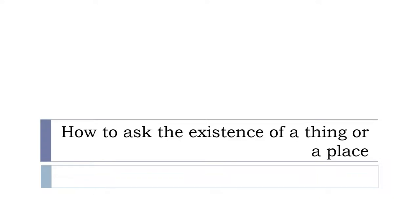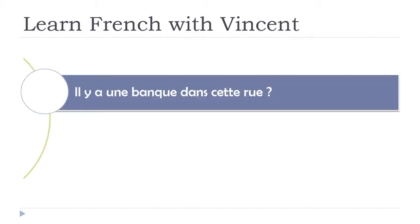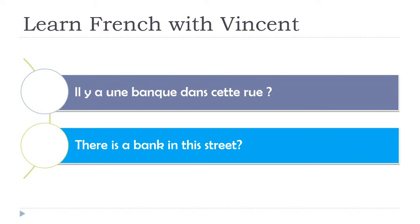Let's see how to ask about the existence of a thing or a place. We'll play a bit with the 'il y a' expression, meaning 'there is' or 'there are'.